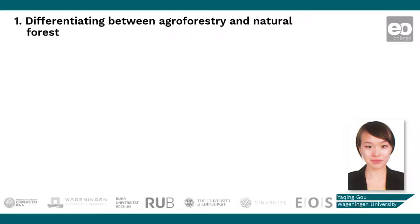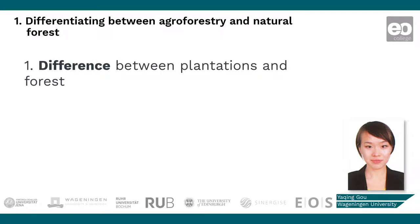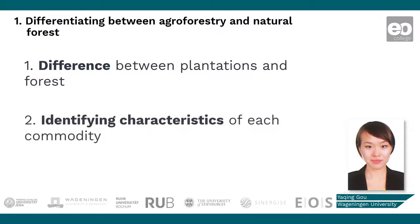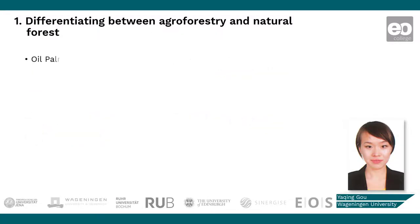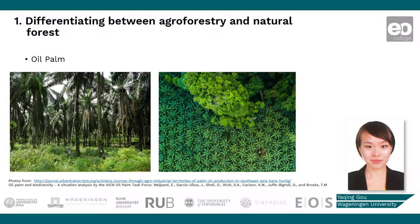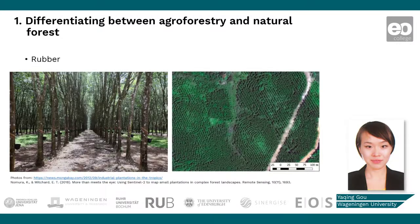Before we dive into technical specifications for various remote sensing techniques, I would like you to look at those photos of different types of tree plantations for agroforestry and think about the following questions: How different are they from a natural forest? What are the identifying characteristics of each commodity? For example, due to the distinct characteristics of the crown shape, oil palm is easy to differentiate from a natural forest. Rubber plantation is another good example where its crown shape, combined with a unique planting pattern for harvesting rubber, creates a distinct spatial pattern.